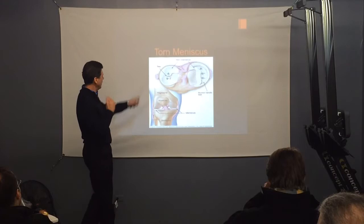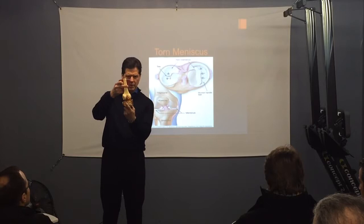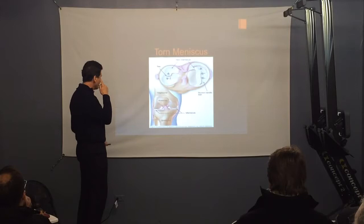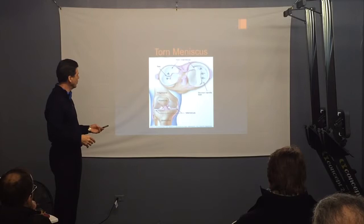Torn meniscus — these are the meniscus inside the knees. Inside the knees you can see these structures — the meniscus are like little rubber discs that go between the two bones to help cushion. So that cushions this area right in here, and also helps with movement. It helps make you more stable.